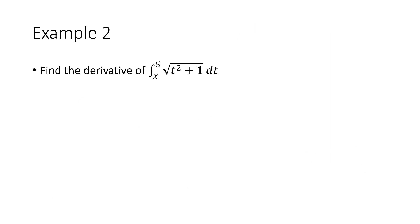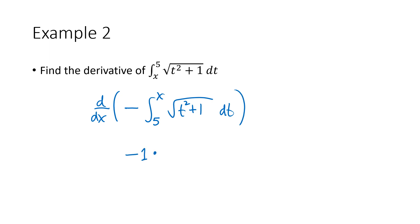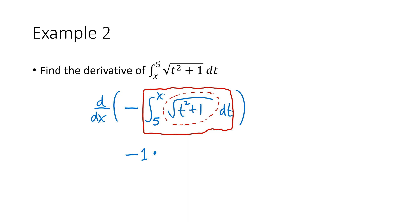This time we're asking for the derivative of the integral from x to 5 of the square root of t squared plus 1 dt. We're almost ready to use the fundamental theorem, but FTC Part 1 requires x on top and a constant on the bottom. We can fix that by flipping the integral — putting 5 on the bottom and x on the top — as long as we bring in a minus sign. The minus stays by the constant multiple rule, and the derivative of the area function is just the original function: the square root of x squared plus 1. The t is just a placeholder variable.